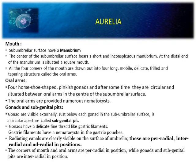Next are the gonads and sub-genital pits. Gonads are visible externally just below the sub-umbrellar surface. The circular aperture is called the sub-genital pit. Gonads have specific thread-like gastric filaments. Gastric filaments have nematocysts in the gastric pouches. Some specific radiating canals are also present on the surface of the umbrella — these are per-radial, inter-radial, or ad-radial in position.